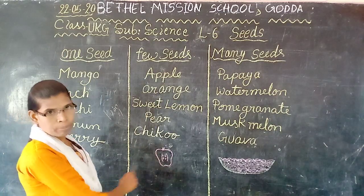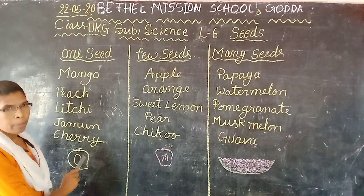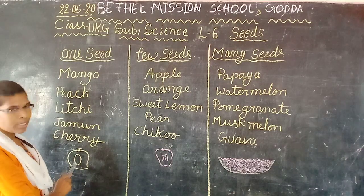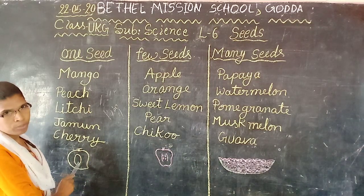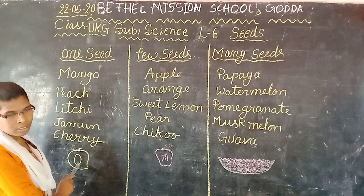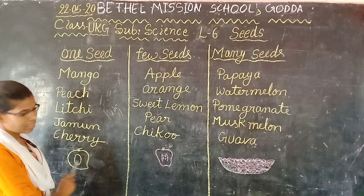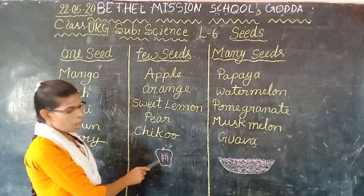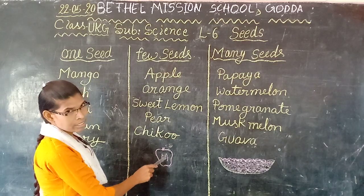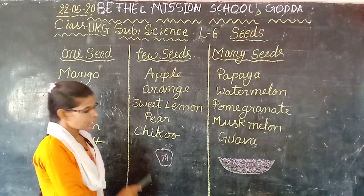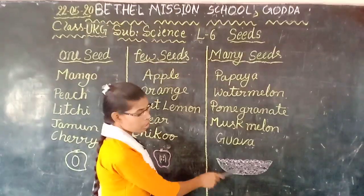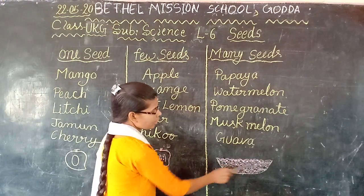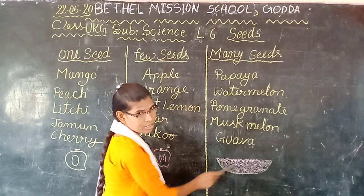Just for example I have given you here in my book. My book has how many seeds — it has one seed, okay, one seed. Now next is apple — how many seeds are there? It has few seeds. Then next is watermelon — how many seeds are there? It has many seeds.